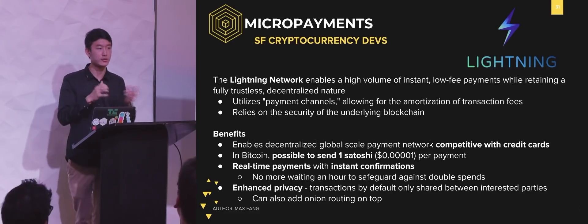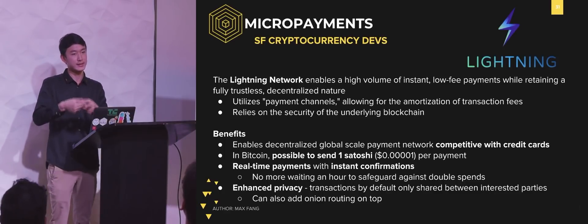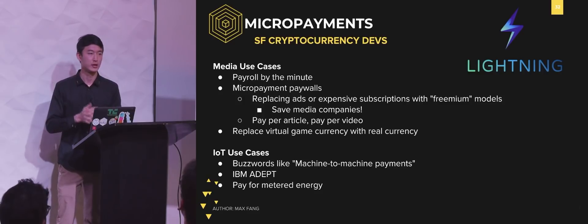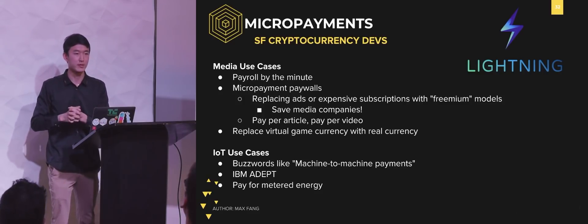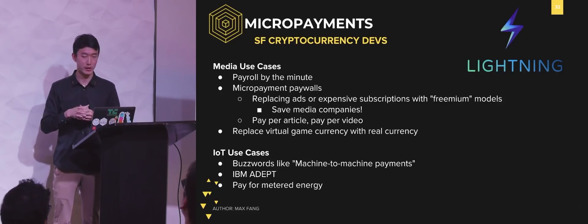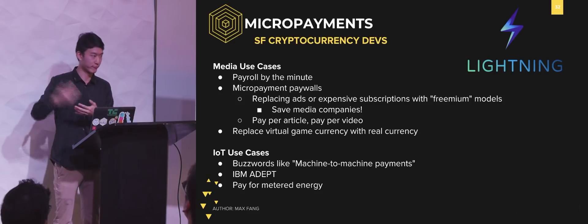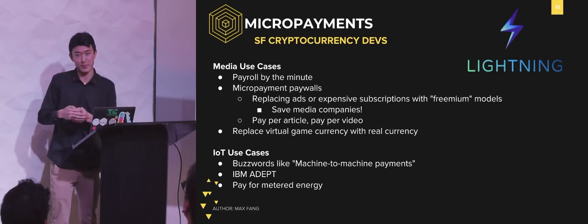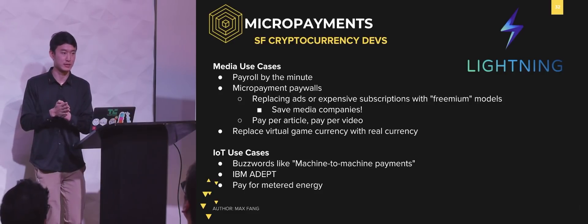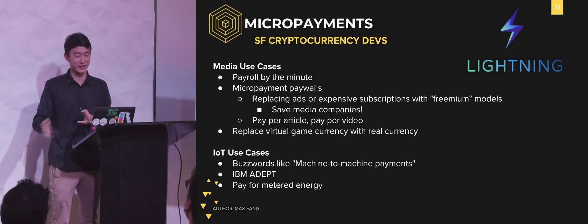So we basically understand what Lightning is: high volume, instant, very low fee payments while retaining the decentralized and trustless nature of the underlying Bitcoin network. What are some use cases? I've categorized them into a few rough groupings. A lot of people talk about standard media use cases: micropayment paywalls under a freemium model — read the first few paragraphs of an article, and if you want to keep reading, click a button that reveals the rest for a tenth of a cent. This is a better revenue model for people producing content. You can also pay for every video you watch, or if you want to get really granular, pay for every five seconds of video that you watch.